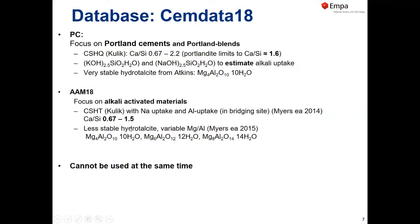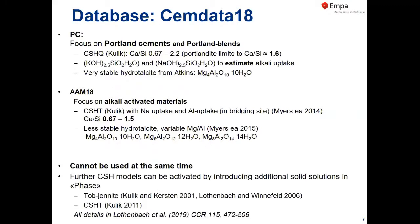For alkali-activated materials we use a CSHQ model with a lower calcium-to-silica ratio that can also model aluminium uptake. For hydrotalsite in alkali-activated slags, we have included different hydrotalsite phases which are a bit less stable. Hydrotalsite is one of the difficult phases because it's hard to measure solubility. Remember: you must choose whether you want to calculate Portland cement or alkali-activated cement — selecting everything causes problems. There are also other CSH models available, but in this course we will always use CSHQ.